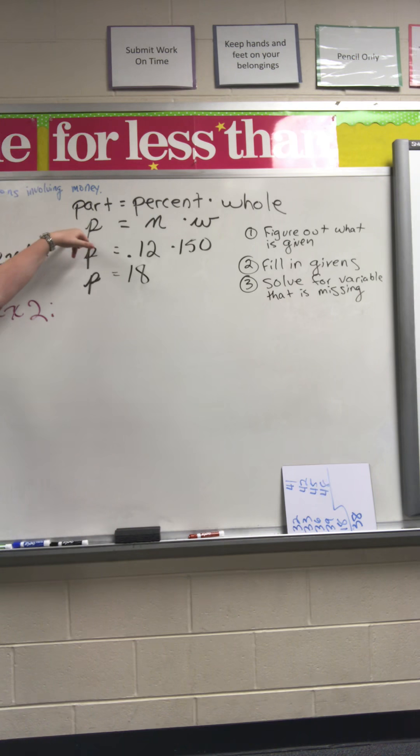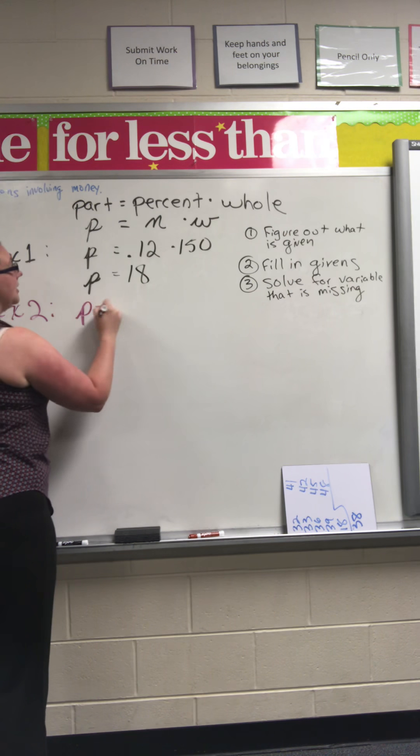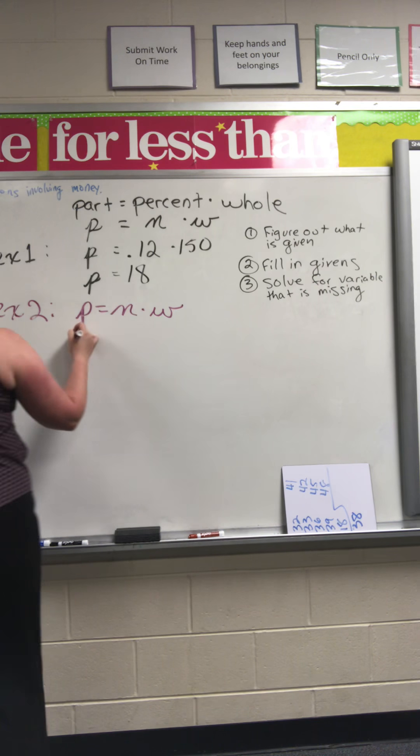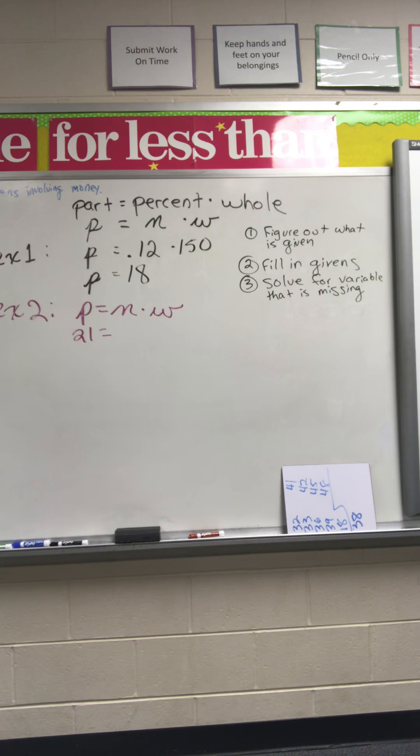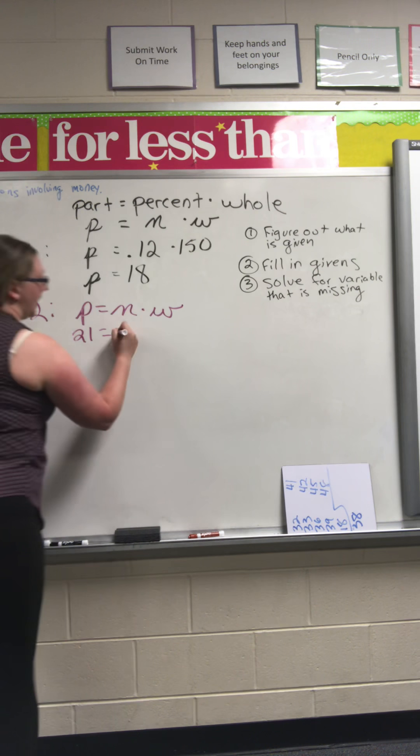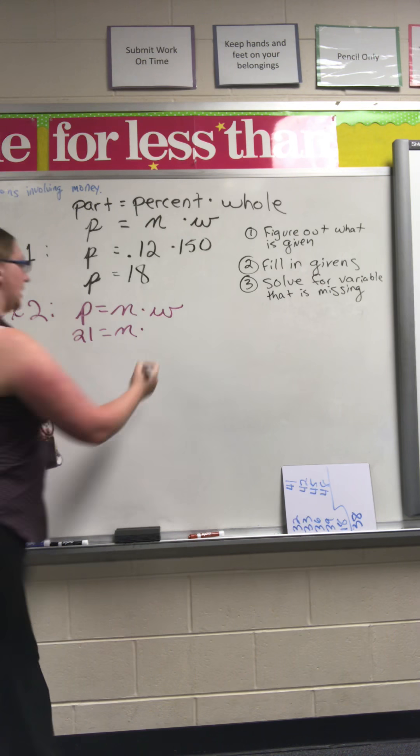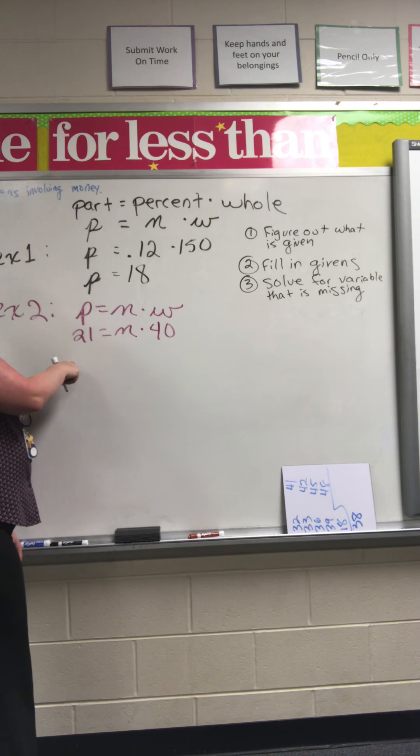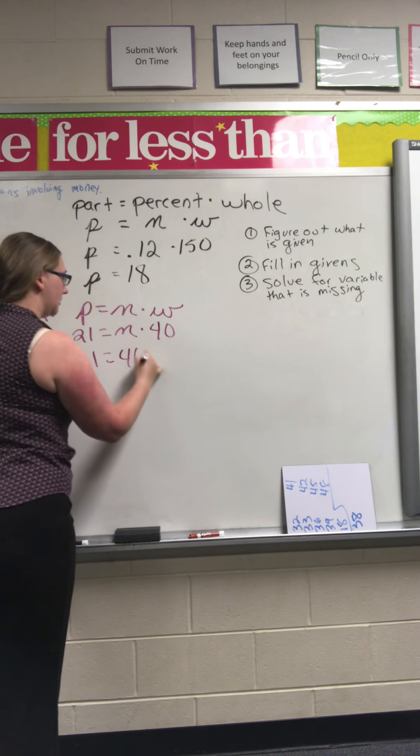Are we given a part? Yes. So we still start with P equals N times W. We're given a part. What is my part? 21 is my part. Am I given a percentage? No. So what do I have to put in that spot? N, my variable. Very good. What is my whole? 40. How do I simplify N times 40? I multiply N times 40. What does that give me? 40N. Can I do anything with 21? No, not yet.